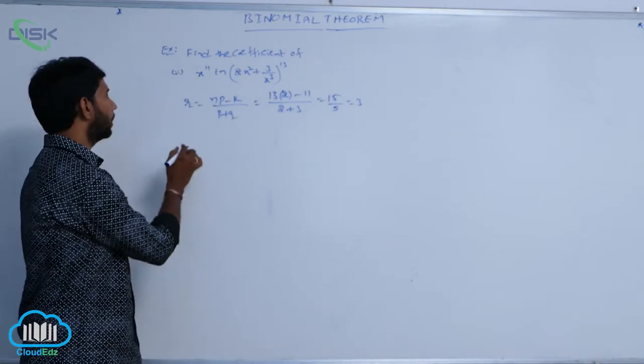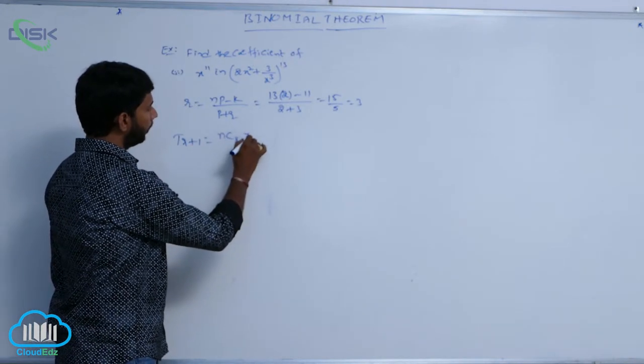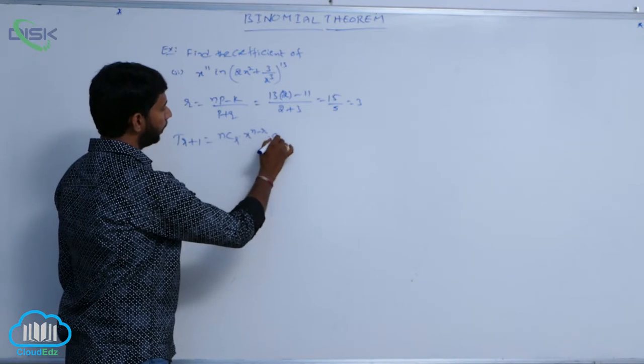Then find the t r plus 1. Here t r plus 1 is equal to n c r into x power n minus r into a power r.